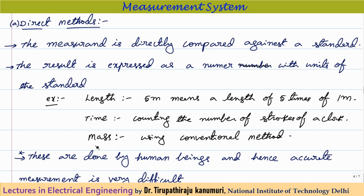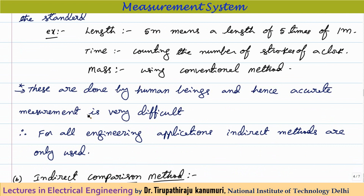To measure mass, like in an old Kirana shop, the shopkeeper uses standard weights — 1 kilogram, half kilogram, 250 grams — adding combinations until the balance is level. However, because human beings are involved, exact accurate values cannot always be obtained due to human error. That is why direct methods are not used for engineering applications, where error must be minimal.